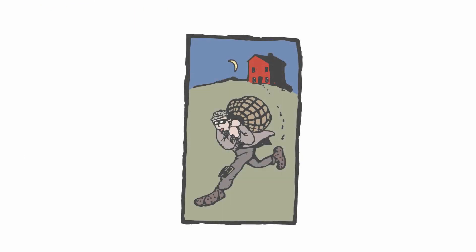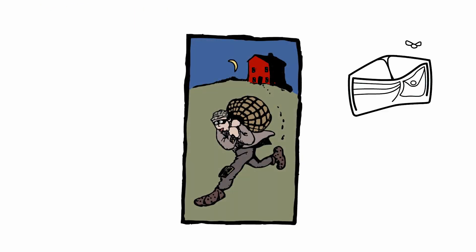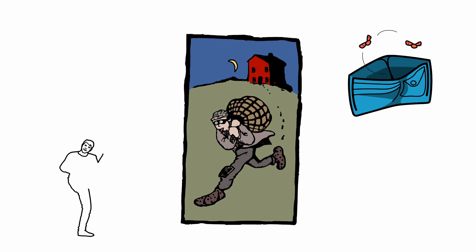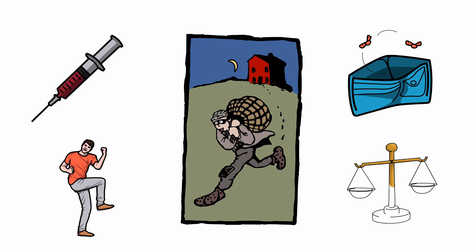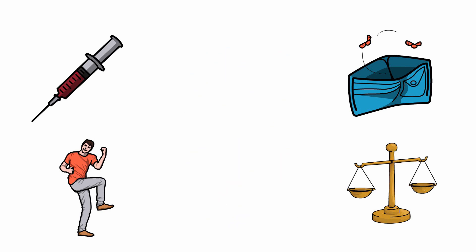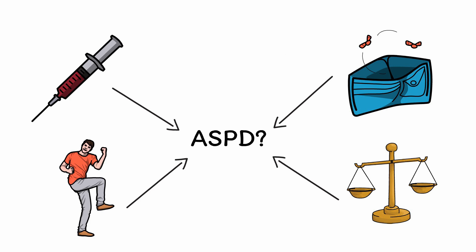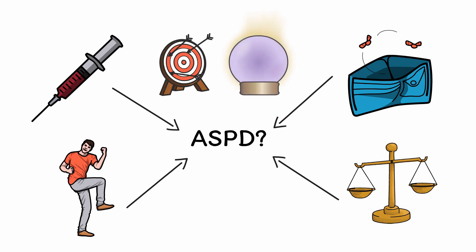For example, think of a man who frequently steals. Does he steal because he lives in poverty and has a hungry family, or does he come from a privileged background and steal for the thrill of it? Does he suffer from an addiction and need money to fuel his habit, or did he never develop an inner sense of morality? Because the reasons for bad behavior are so numerous, it seems misguided to lump all of them under a single diagnosis — yet that's exactly what the DSM attempts to do. As a result, ASPD has very poor validity and little prognostic value.